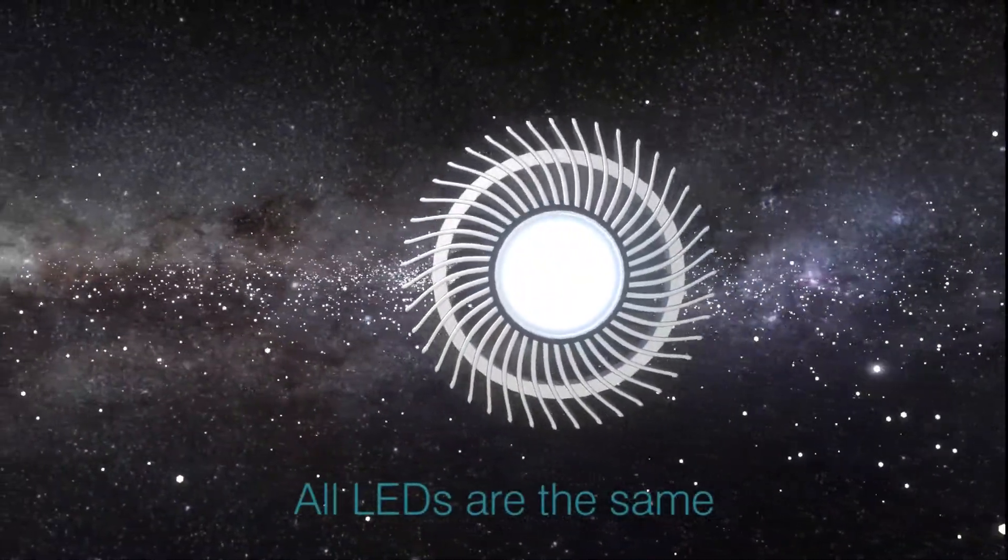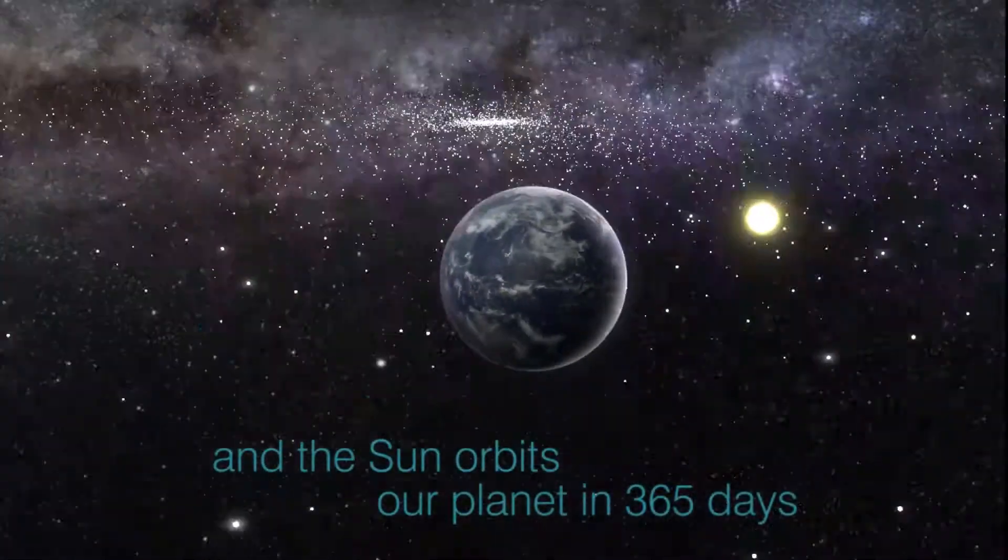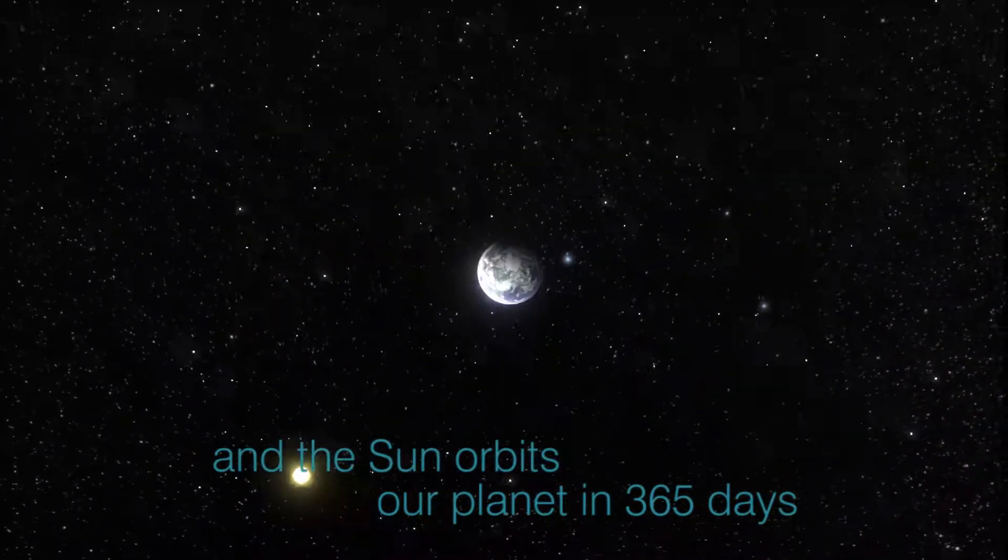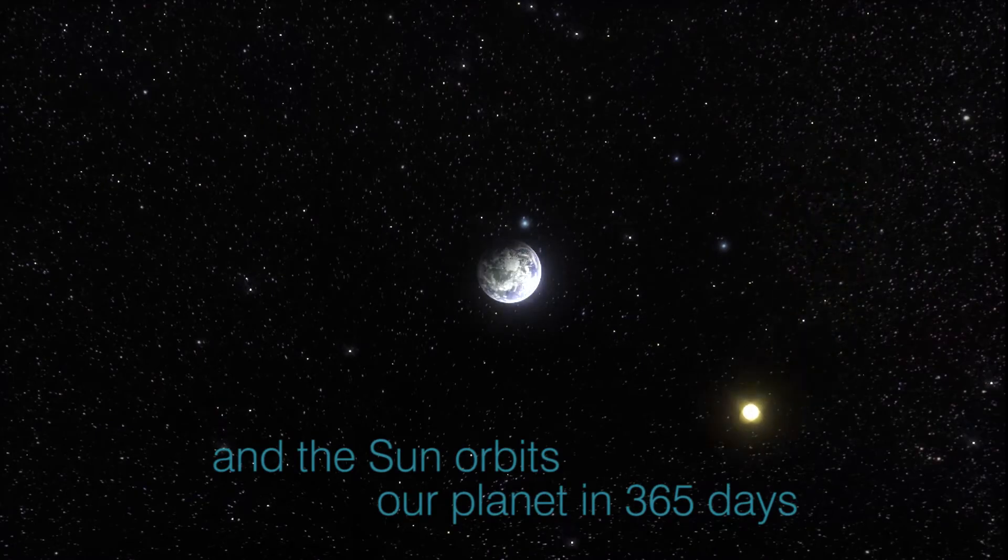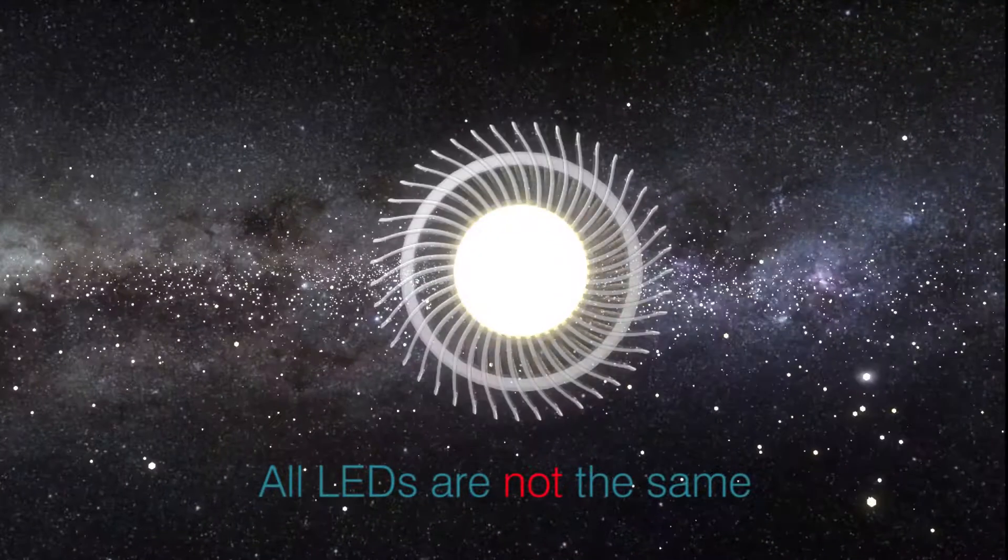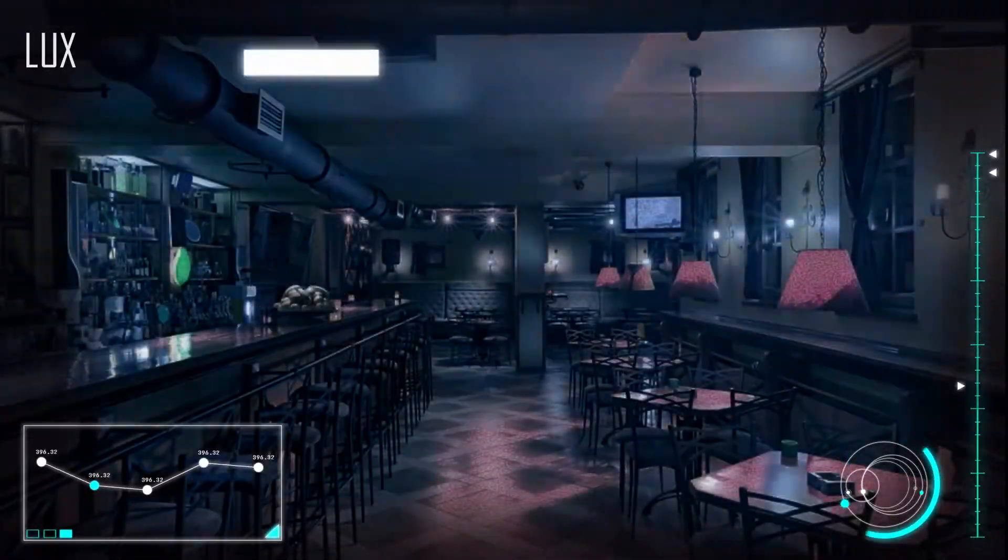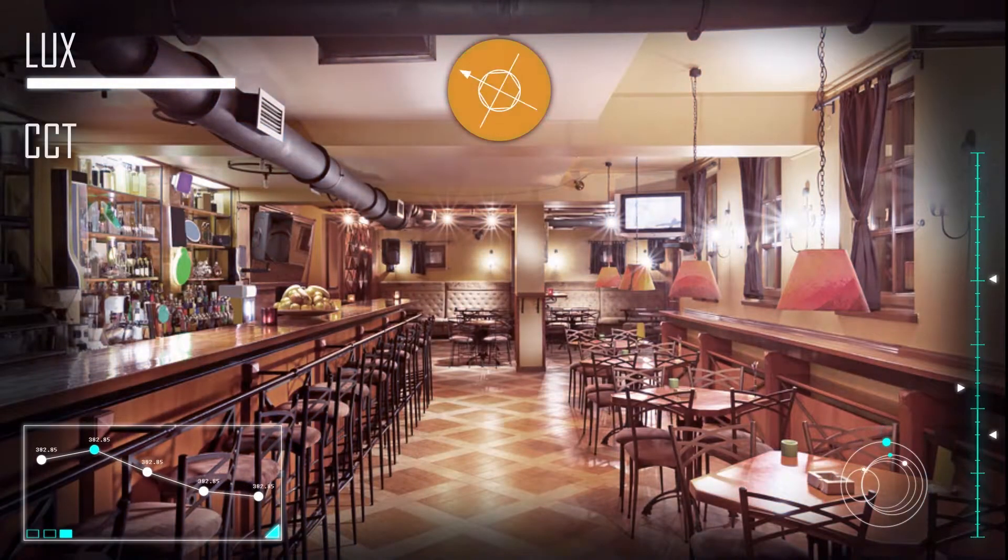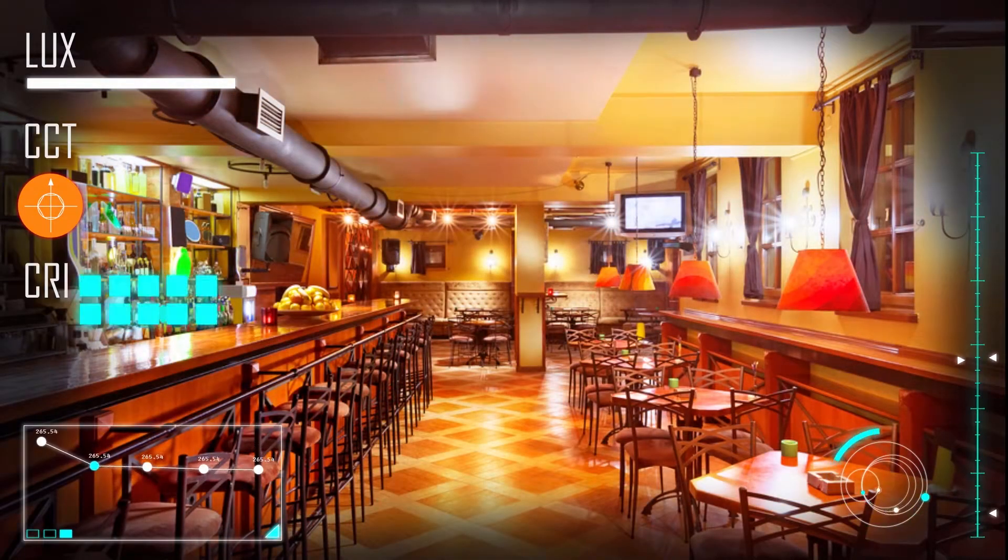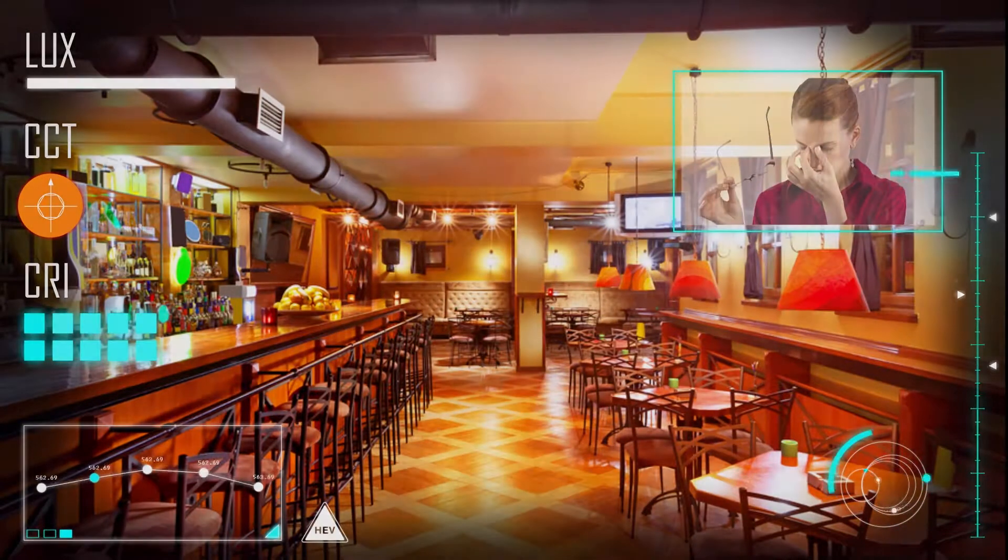All LEDs are the same and the Sun orbits our planet in 365 days. Well, not really. I mean, all LEDs are not the same. Differences in lux, CCT, CRI, HEV light, and flicker can all influence how we see and feel.